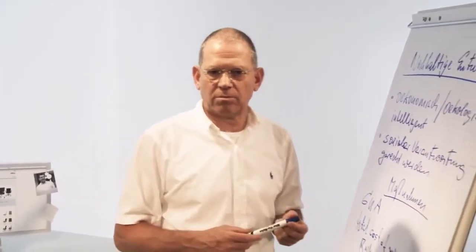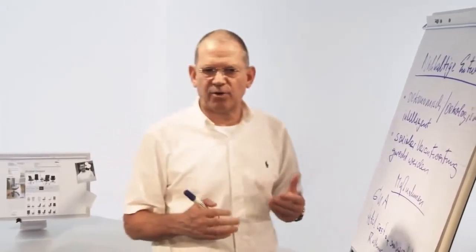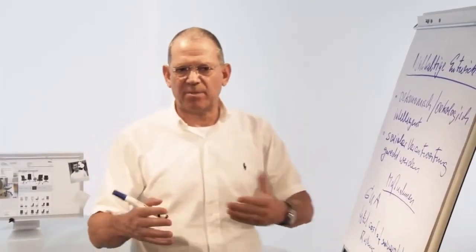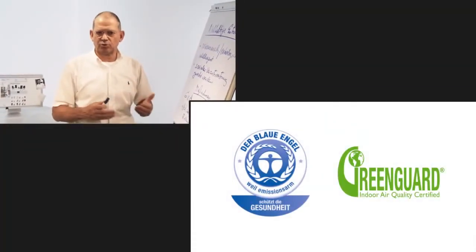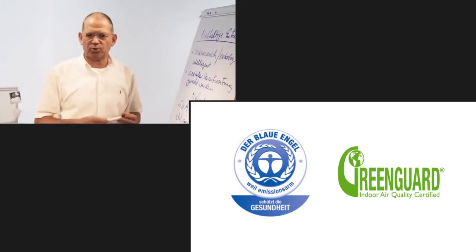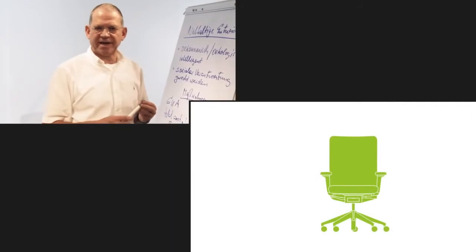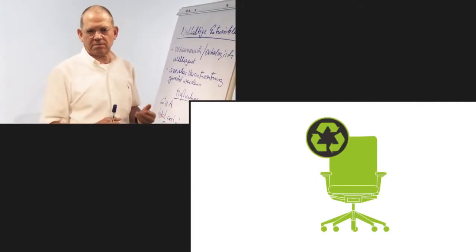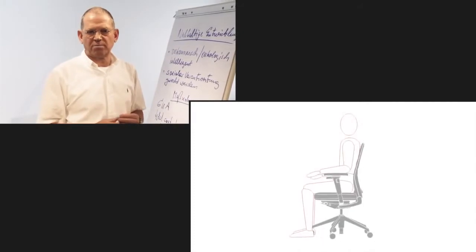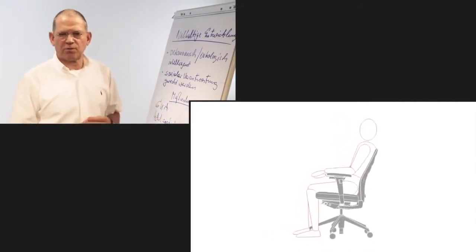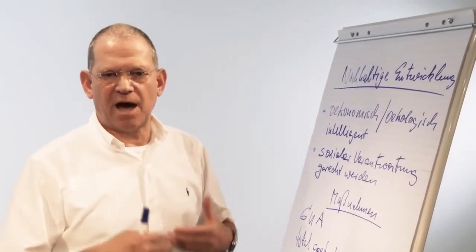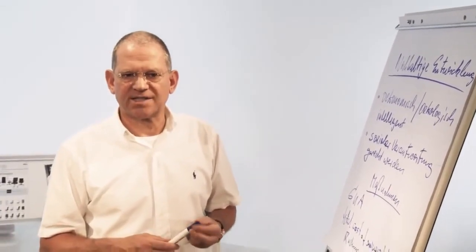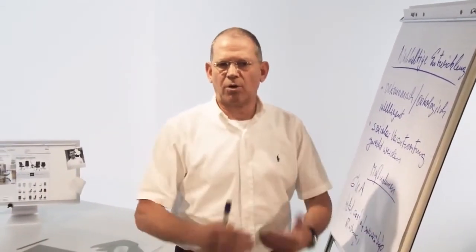Der dritte Punkt der nachhaltigen Entwicklung ist die soziale Verantwortung. Die soziale Verantwortung ist gegeben, indem die Gesellschaft nicht belastet wird durch zusätzlichen Müll, sondern wir das Produkt entsprechend sorgfältig recyceln. Darüber hinaus bietet das ausgeklügelte biomechanische Konzept den Nutzen für den Mitarbeitenden. Das heißt, der Arbeitgeber, der Käufer wird seiner sozialen Verantwortung der Gesellschaft und auch den Mitarbeitenden gegenüber gerecht. Und damit ist die Entscheidung für das ID-Chair-Konzept modern und richtig.